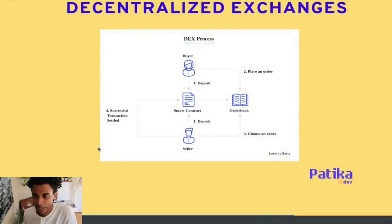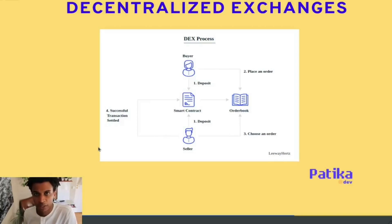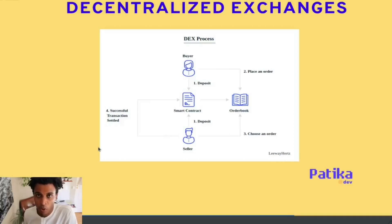Now let's look at decentralized exchanges. If you've ever traveled and exchanged currencies at a bank, ATM, or currency exchange at an airport — where you hand over currency, see the price, and get an exchange back — we can do that in a decentralized way without involving a bank, through the power of smart contracts. A smart contract can maintain an order book that matches buyers depositing funds and sellers depositing funds in a different token, like ETH and USDC. The order book makes a match between the two parties, provides a price algorithmically, and settles the transaction between them.